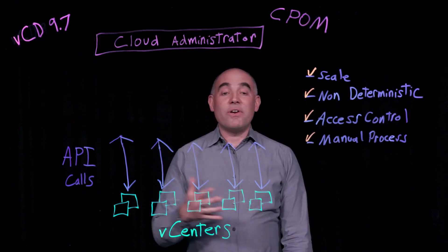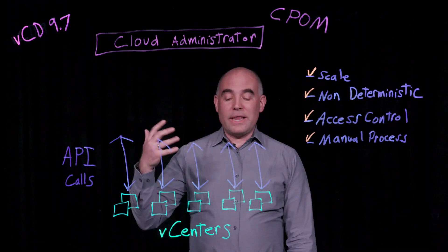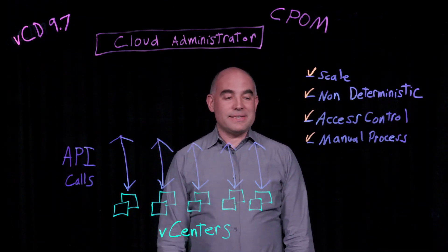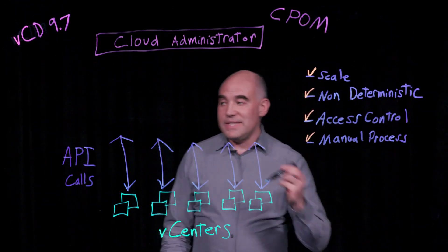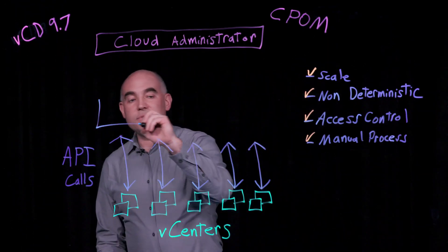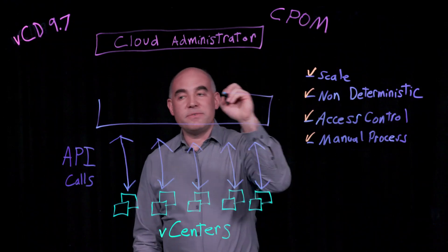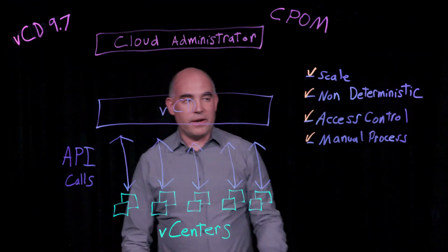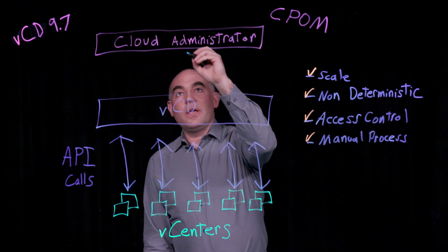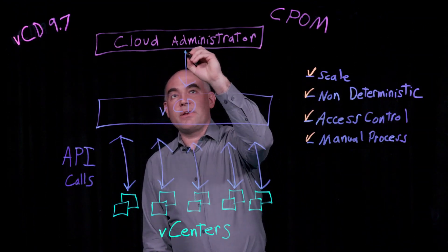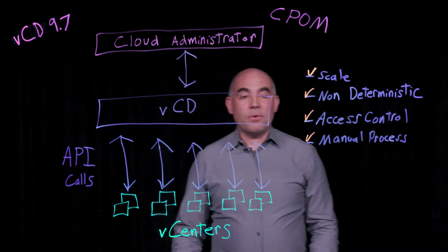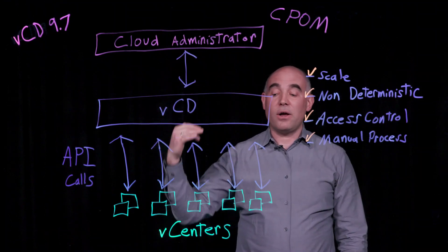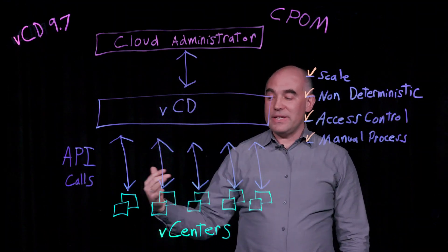And finally, this is all a very manual process for a cloud administrator to be addressing individual vCenters at this scale. So what we've decided to do is introduce a use case with CPOM in which VCD gets inserted as an abstraction layer between the cloud administrator and these vCenters. The cloud administrator is going to direct all API calls directly to VCD, and VCD is going to proxy those API calls on his behalf to all of the vCenters.